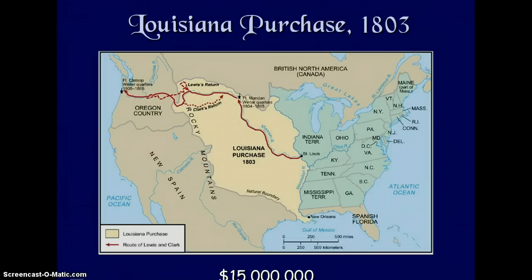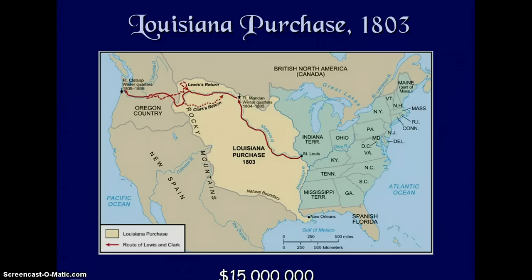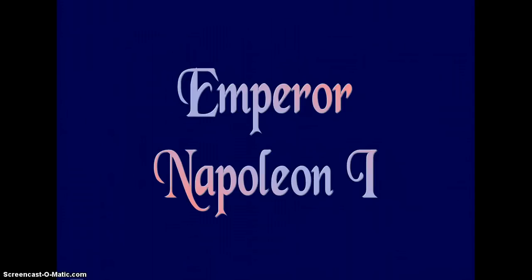Napoleon had a sphere of influence that extended to the Louisiana Purchase of 1803, where the United States bought this entire territory from the French for $15 million. At the time, areas such as Michigan, Illinois, and Wisconsin were part of the Indiana Territory, with U.S. states on the right side of the map.